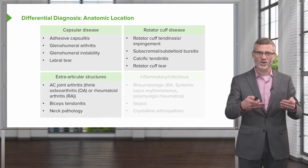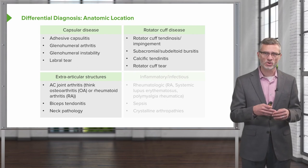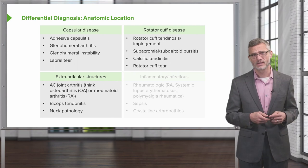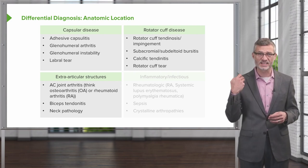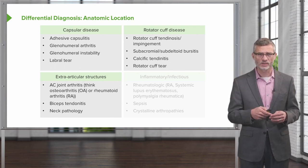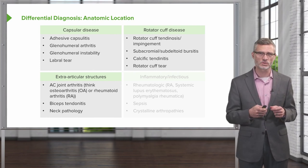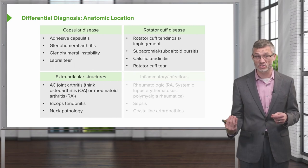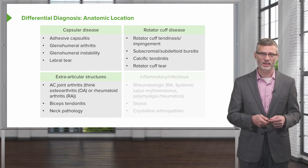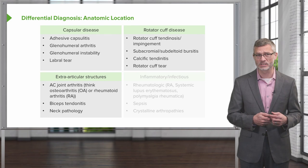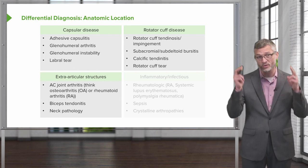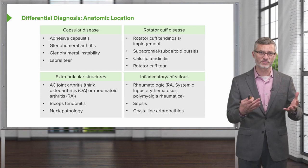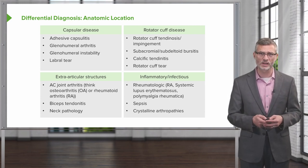In terms of extra-articular structures — structures related to shoulder movement but not tied directly to the glenohumeral joint — you have the acromioclavicular joint, which has about 15 degrees of range of motion, the biceps tendon (the long head of which inserts into the glenoid labrum), and don't forget about neck pathology, which is a common cause of shoulder pain.